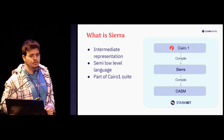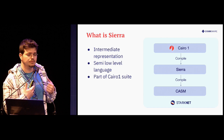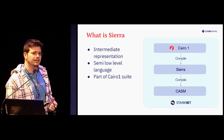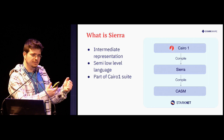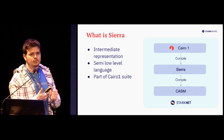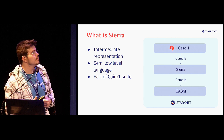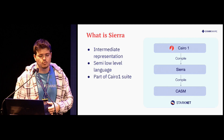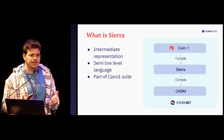The new flow in Cairo 1.0 is that first the code is compiled to Sierra, a safe intermediate representation, and then Sierra is later deployed to StarkNet, where it's compiled down to Cairo Assembly. I'll explain a bit why we chose this and what the benefits are.